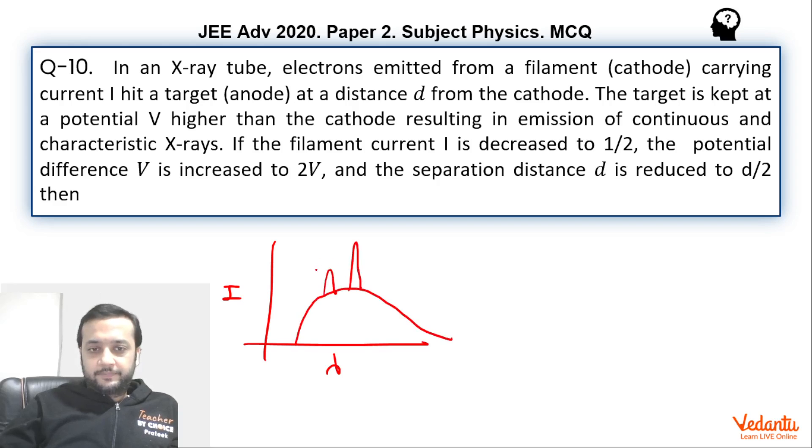This is K beta, this is K alpha and L series will also exist. So basically we can see that these are characteristic wavelengths and these are continuous wavelengths. And this is the cutoff, lambda cutoff.